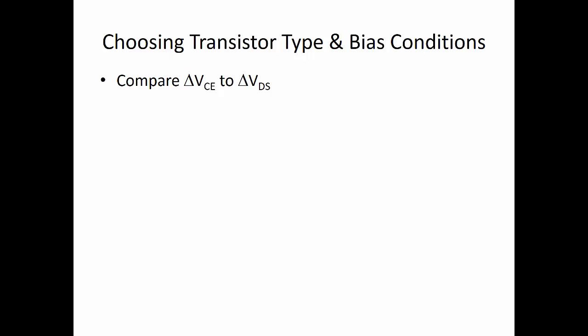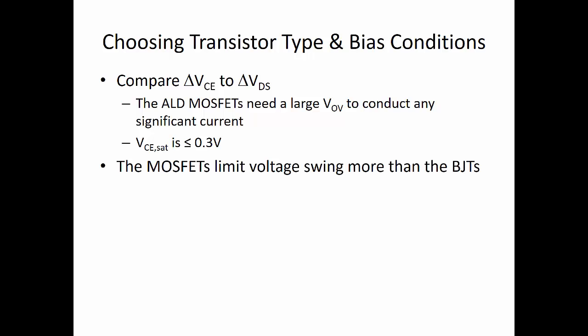I would start by comparing the delta VC to the delta VDS, the voltage swings that you can expect at the output. Remember that the ALD MOSFETs will require a very large overdrive voltage to conduct any significant current. The collector-to-emitter saturation voltage for the BJTs is less than 0.3 volts, so you should be able to get larger output voltage swings with the BJTs.